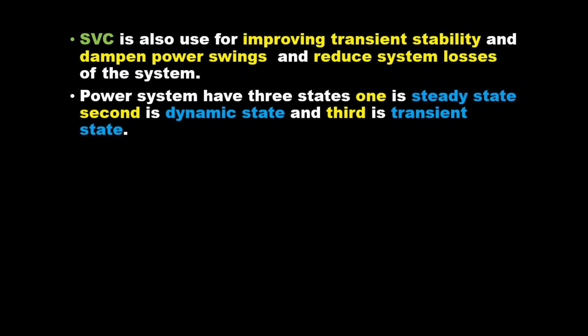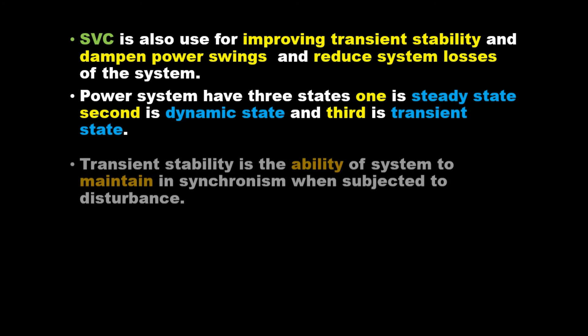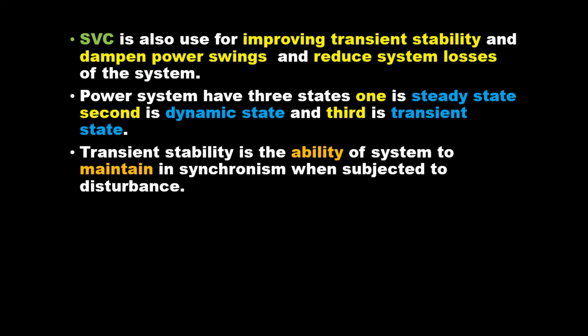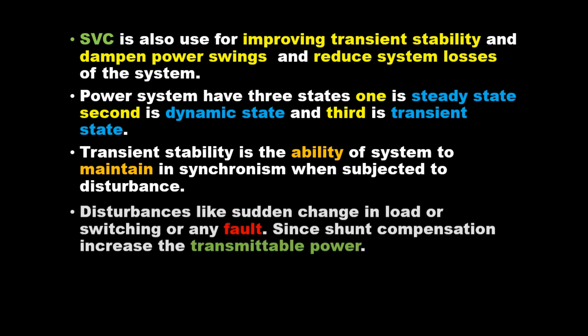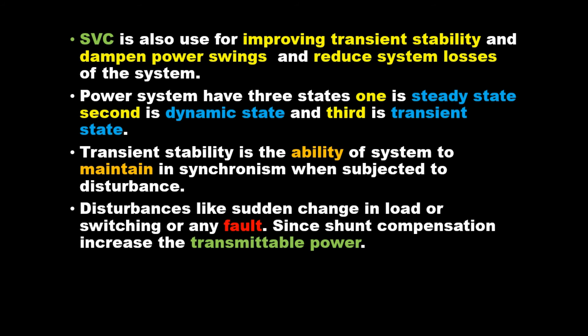Power systems have three states: steady state, dynamic state, and transient state. Transient stability is the ability of the system to maintain synchronism when subjected to a disturbance, such as sudden change in load, switching, or any fault.